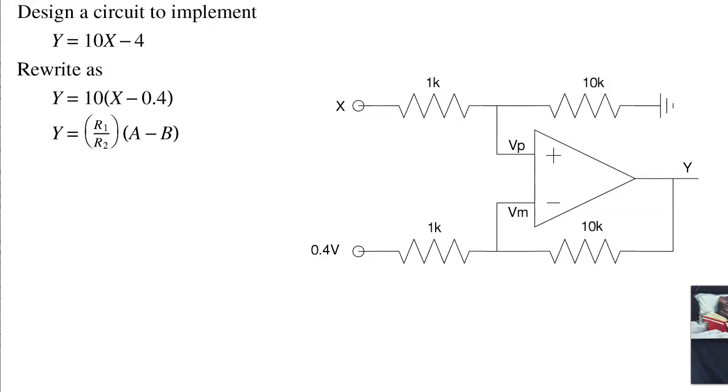So that's some of the circuits you can build with an op-amp circuit. Again, the thing to note, when I analyze op-amp circuits with negative feedback, V plus equals V minus.